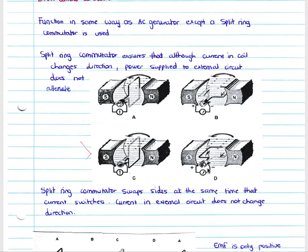The split-ring commutator never moves. Although the movement of current in your coil has changed, it is still moving out of the left-hand side of your commutator and into the right-hand side. Your current will always move into it on the right and away on the left, depending on which side of the coil is on the right and which is connected to either side of the split-ring commutator.